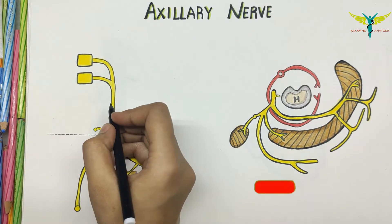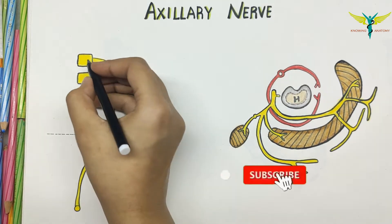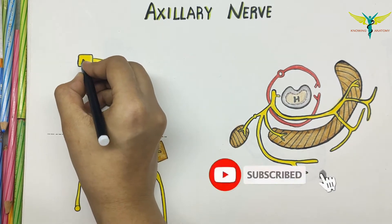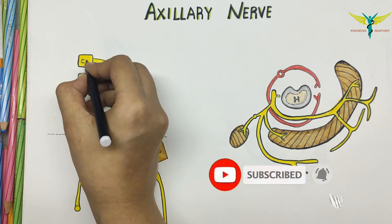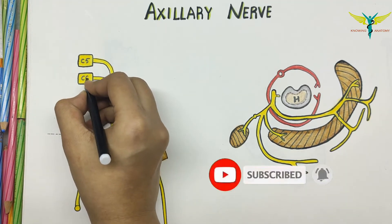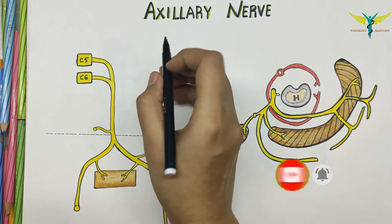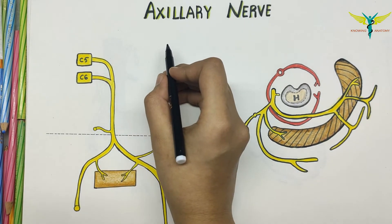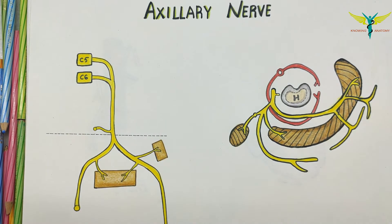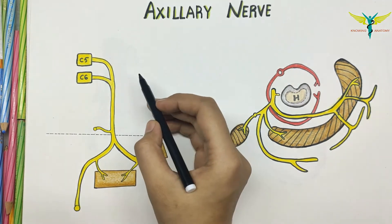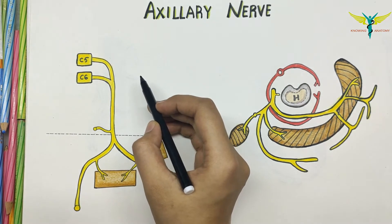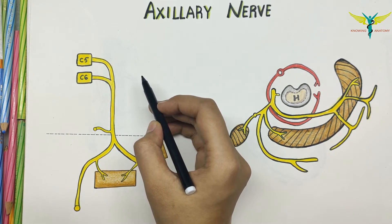The axillary nerve arises from C5 and C6, meaning it arises from the posterior cord of the brachial plexus near the lower border of the subscapularis muscle.